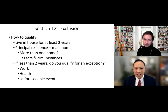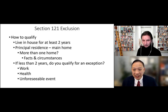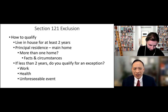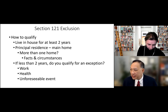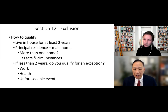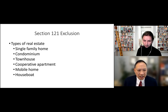The homeowner's exemption is public information — you can look it up on the county tax assessor's website. Be consistent: if you claim a property as your principal residence, make sure the homeowner's exemption is on that house. There are exceptions for selling in less than two years: a work-related move, a health situation, physical or mental health, or an unforeseeable event. Various property types qualify — single-family home, condo, townhouse, co-op, mobile home, houseboat — but not RVs.